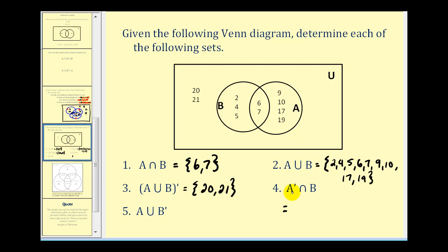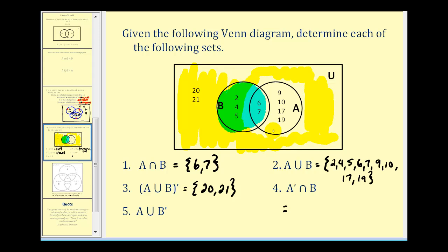For the complement of A intersected with B: the complement of A is all the elements not in set A — let's shade that region. We then intersect this with set B. The elements in both the complement of A and set B are four, five, and six.